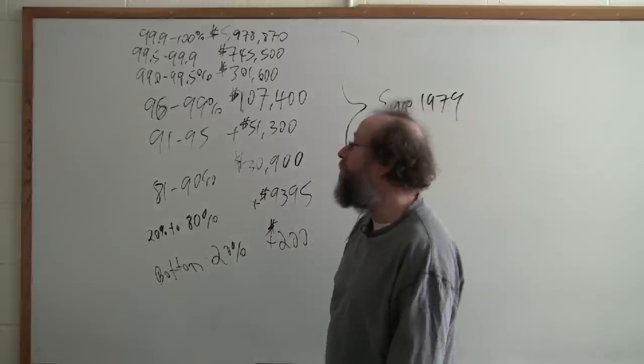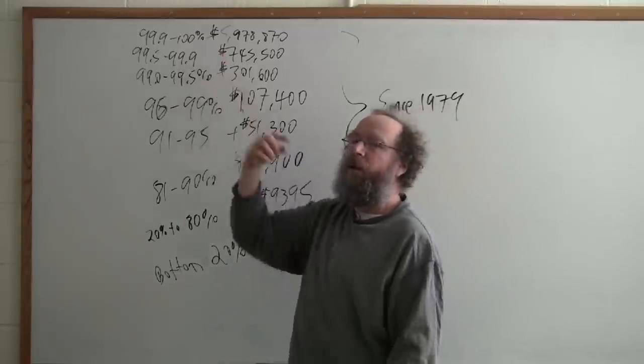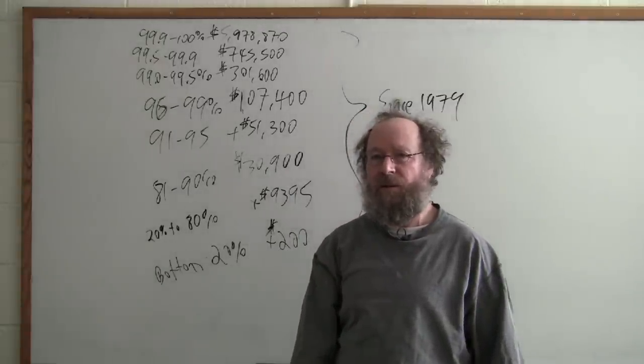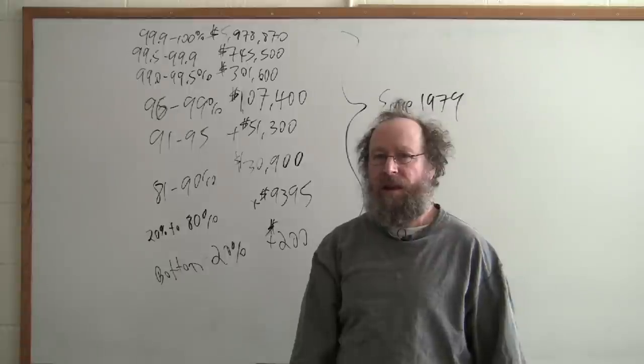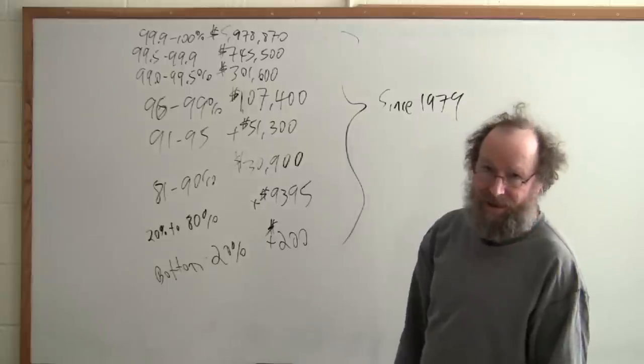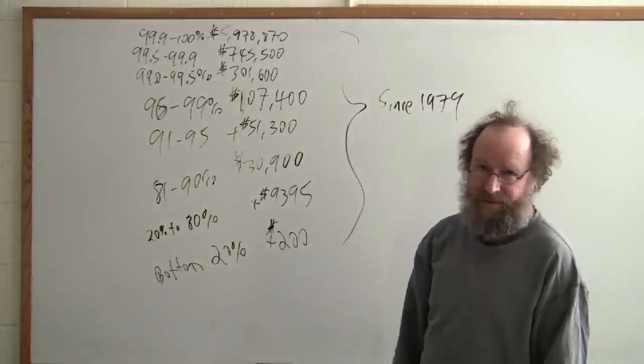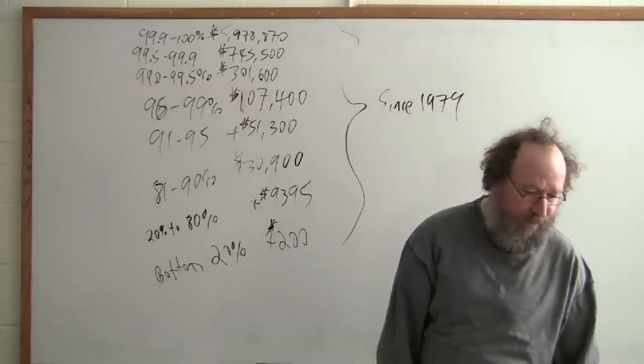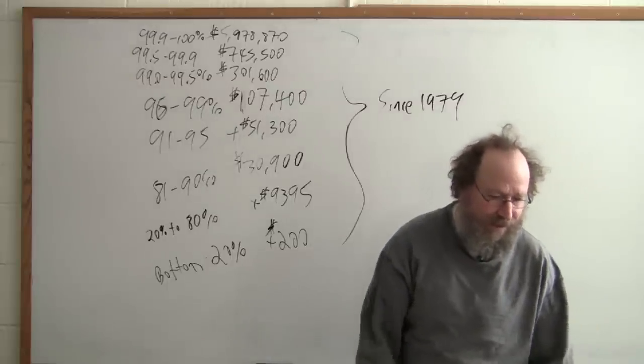Until you get to the ones who have really gained, the top 1 tenth of 1% of the population, 300,000 Americans live in those households, they have gained $5.978 million. Almost $6 million.